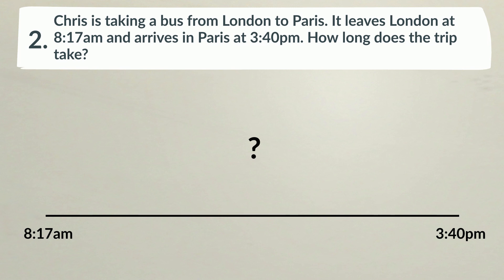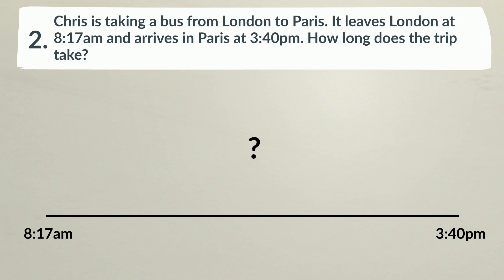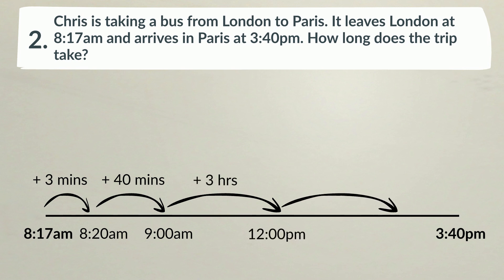In the previous problem, we had a set total time we had to jump. This time, we have to keep jumping along the timeline until we reach our end time. To make things easier, let's start by adding 3 minutes. 8:17am plus 3 minutes is 8:20am, which is an easier time for us to work with. We must record each jump and the time we land. Let's jump 40 minutes — this lands us at 9 o'clock. Now we can jump easily in multiples of an hour. Three hours takes us to 12pm, three more hours takes us to 3pm, and a final jump of 40 minutes lands us right on the end time, 3:40pm.